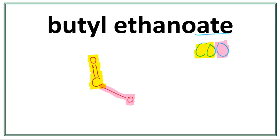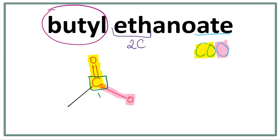We have the functional group drawn in. Let's work on the parent chain. This 'et' right here tells us that there are two carbons in the parent chain. The first carbon is always the carbon in the functional group, so we're going to draw one more carbon because we need two carbons in total. Now we have the functional group and the parent chain drawn in. Let's work on the side chain. The side chain is butyl, which means there are four carbons in the side chain, and it always attaches with this oxygen right here.